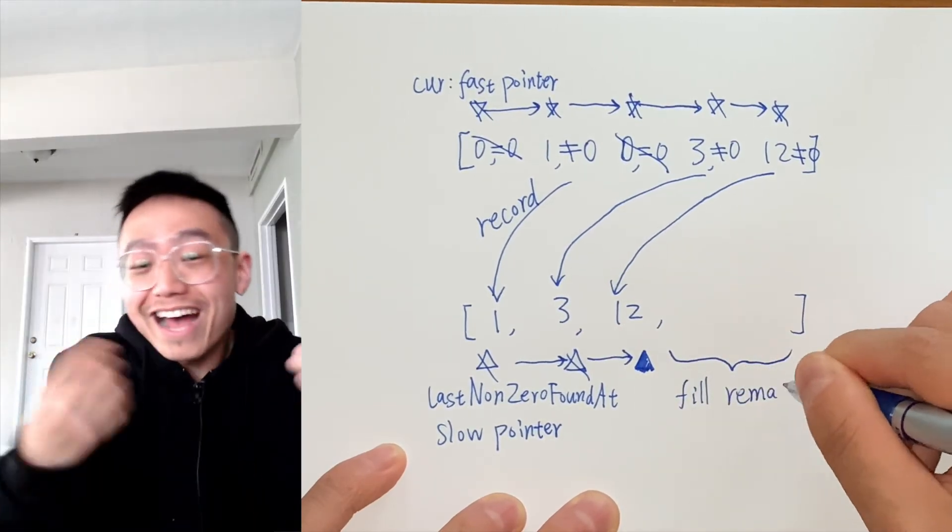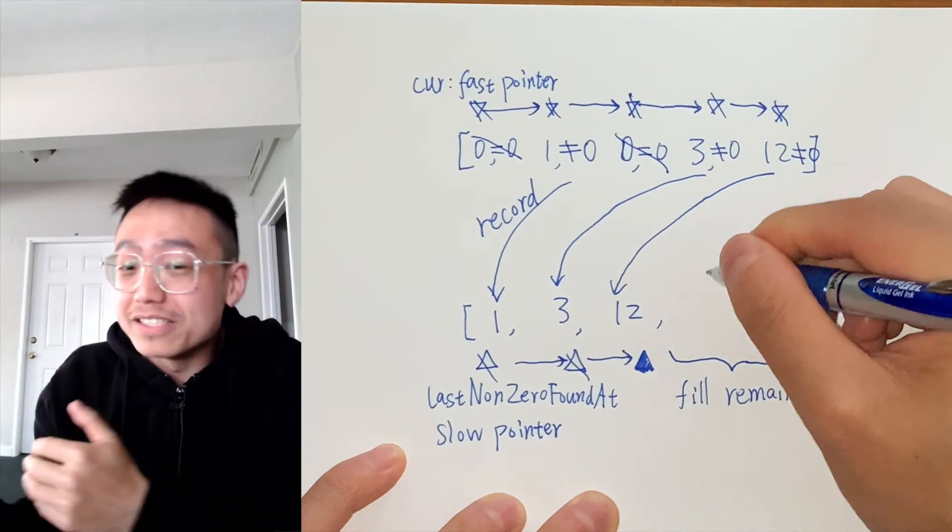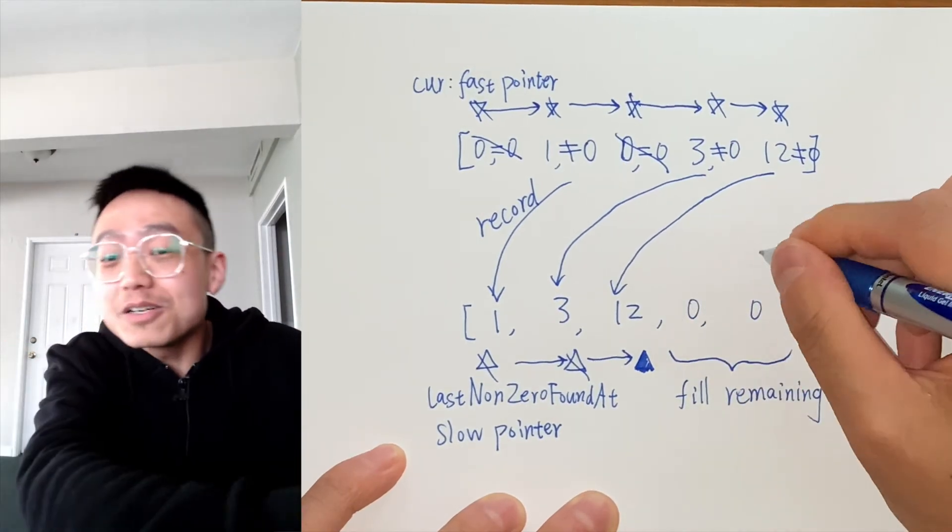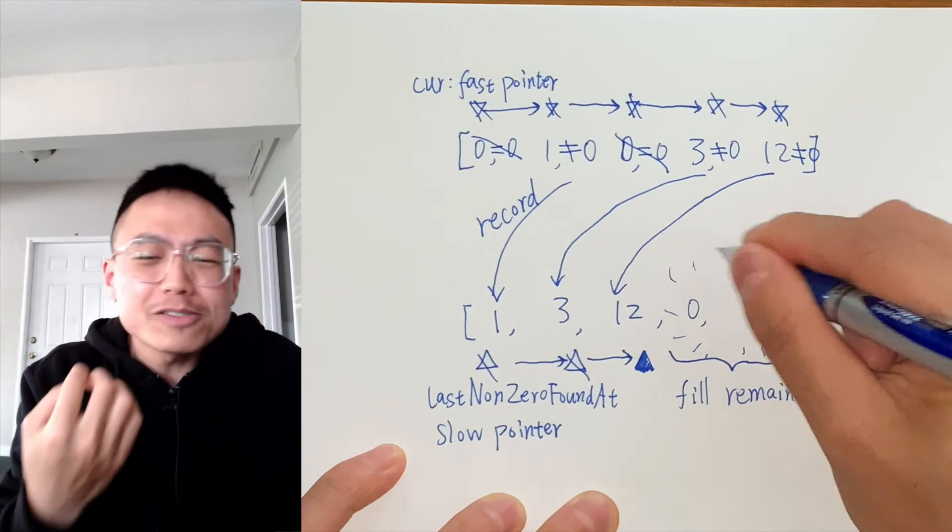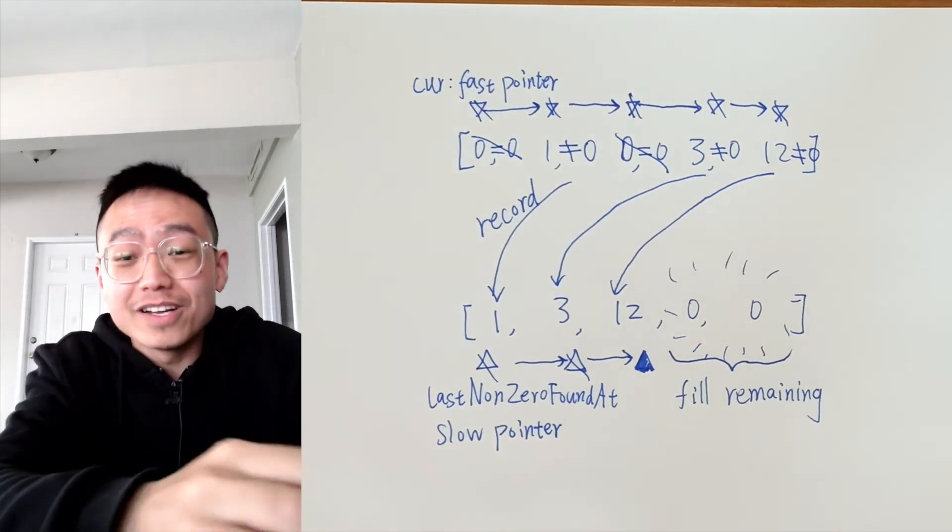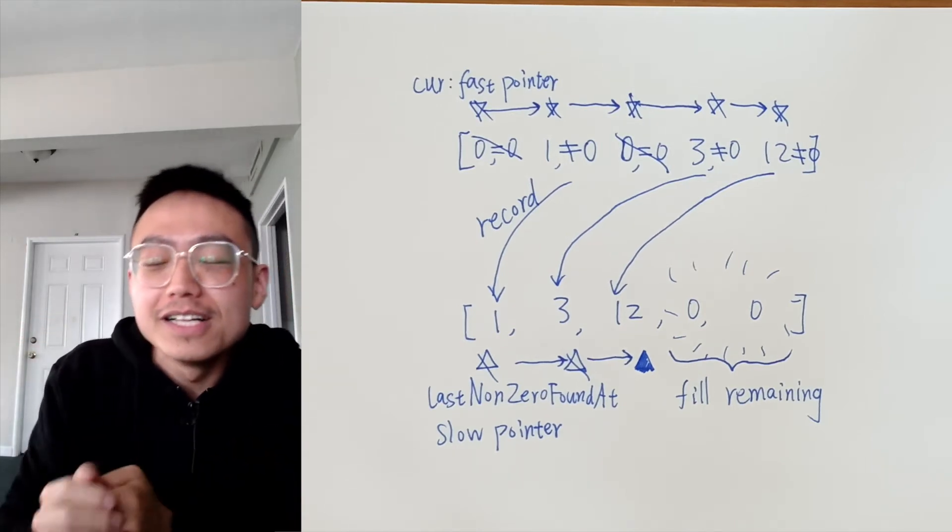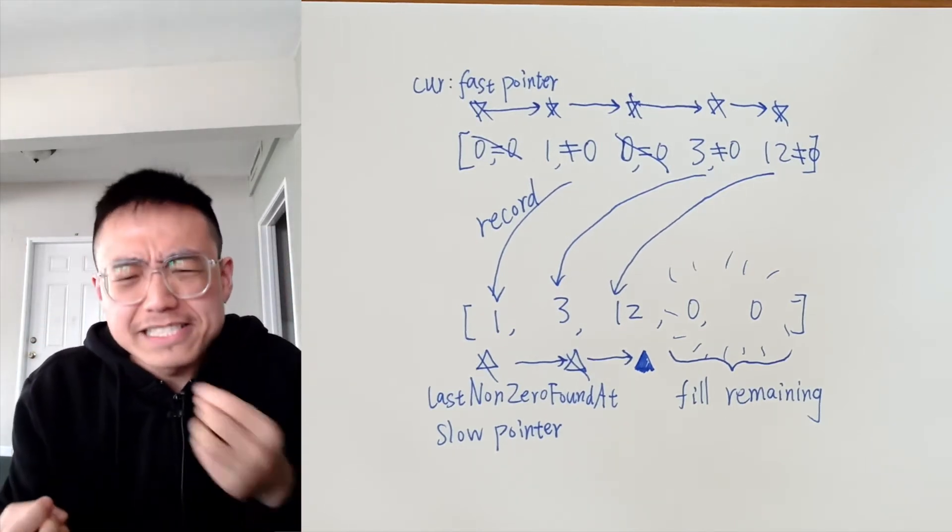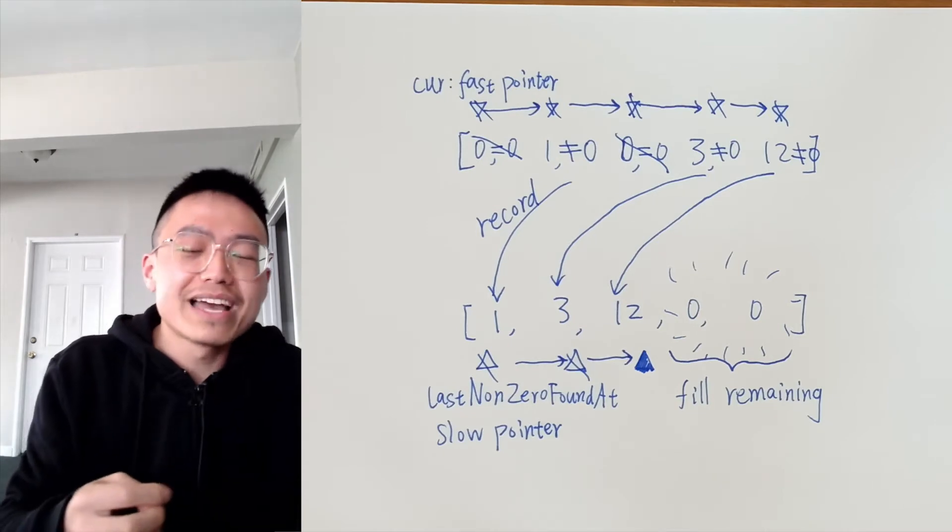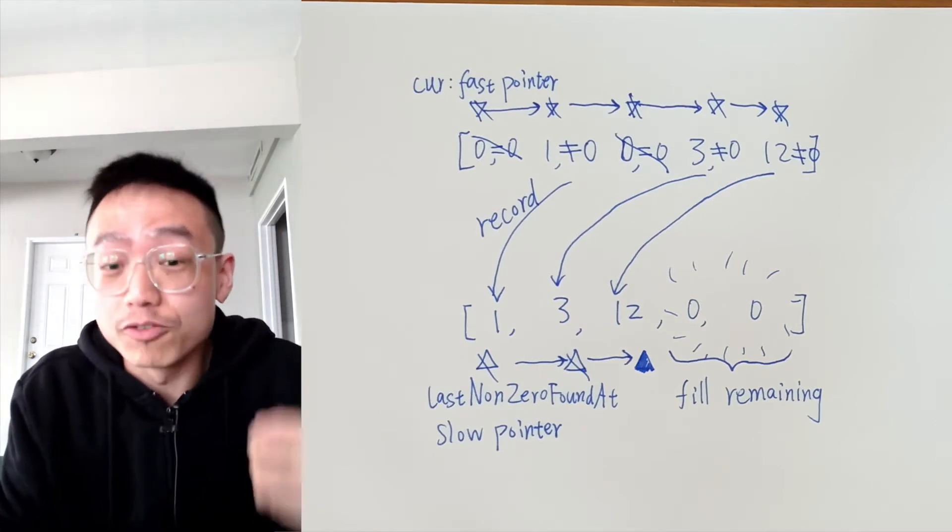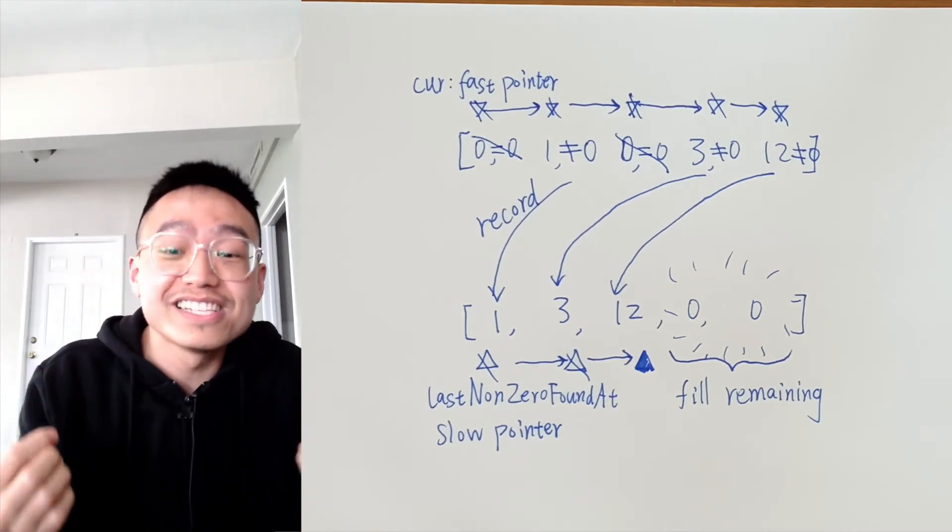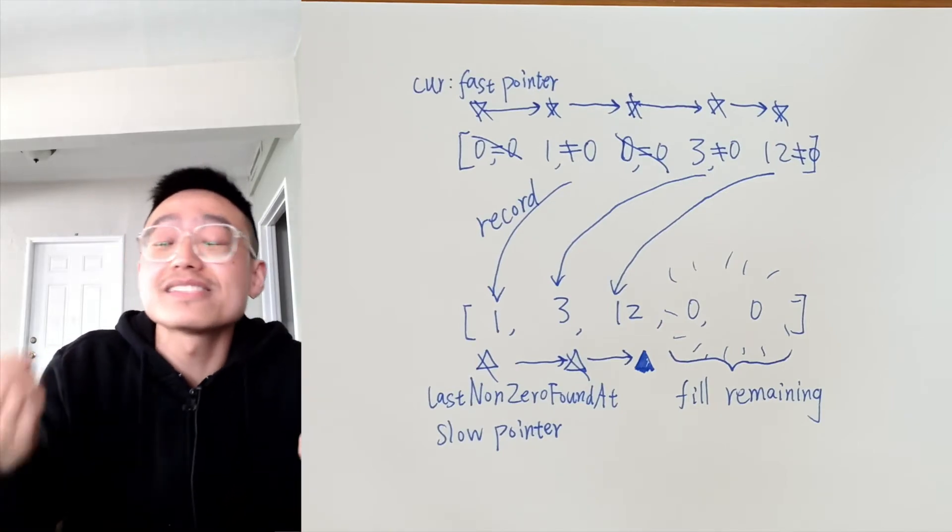After the cur index reaches the end of the array, we now know that all the non-zero elements have moved to the beginning of the array in the original order. Now comes the time to fulfill another requirement. We move all zeros to the end. We simply need to fill all the indexes after the lastNonZeroFoundAt index with zero.